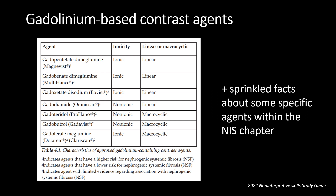There's a table in your study material, and some agents are labeled ionic, non-ionic, linear, and macrocyclic. There are some footnotes and additional sprinkled facts about specific agents in that packet. It's very difficult to digest because there are so many of them and they all sound similar. Hopefully this outline will help you memorize these things.